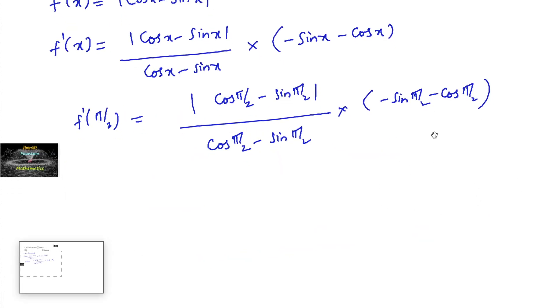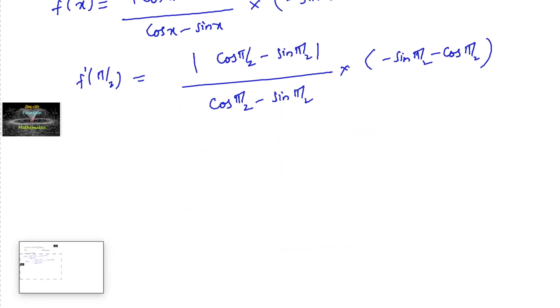So which equals to, cos π by 2 is zero, sin π by 2 is 1, divided by 0 minus 1, into minus 1 minus 0,